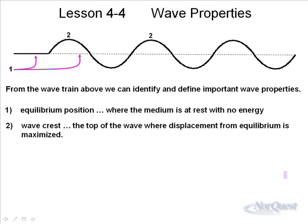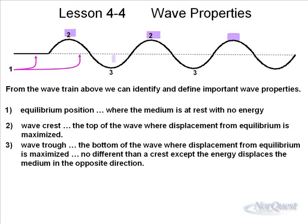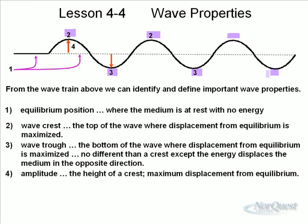When the medium is displaced upward, we call that a wave crest. The numbered points here represent wave crests. A crest is above the equilibrium position. Below the equilibrium position, we have something called a trough. On some waves, the troughs and crests are identical — they are no different than a crest except the energy displaces the medium in the opposite direction. The amplitude is the distance from the equilibrium position to the top of a crest or the bottom of a trough — it's the maximum displacement from equilibrium.